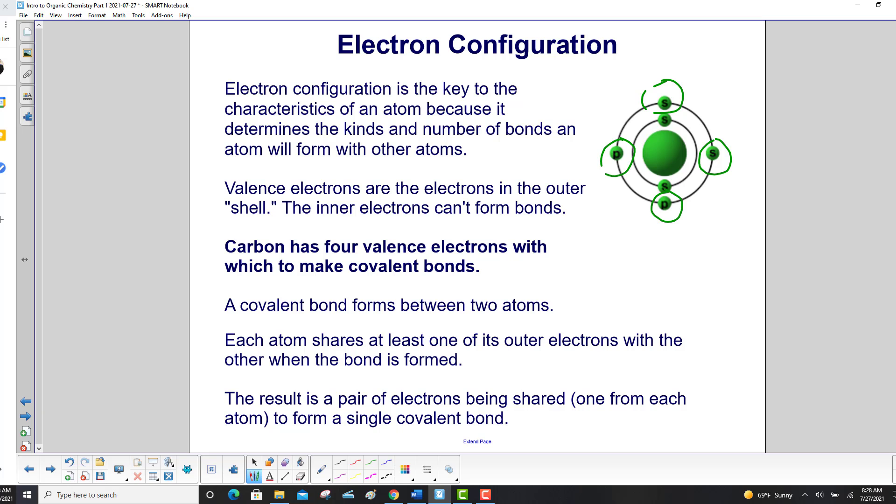A covalent bond forms between two atoms. Each atom shares at least one of its outer electrons with the other when the bond is formed. The result is a pair of electrons being shared, one from each atom, to form a single covalent bond. So two electrons, one covalent bond.